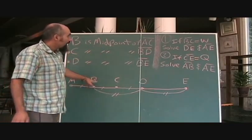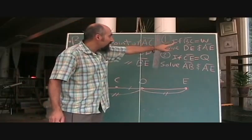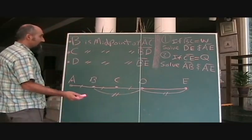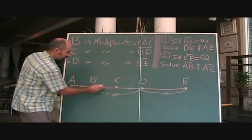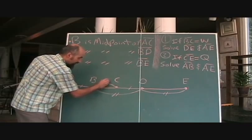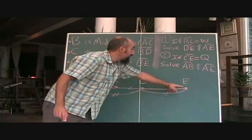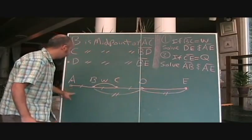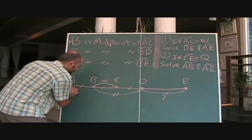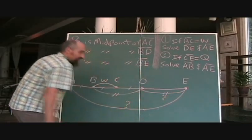Now let's look at the questions. What are they asking us? If BC is W, solve for DE and AE. So let's lay this down. If BC is W, so the length here is W, solve for DE—we want to solve for this. And solve for AE—we want to solve for this. So we want to find out exactly what this is and what this is.